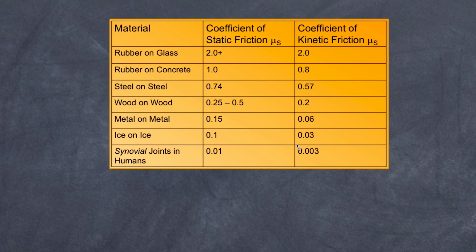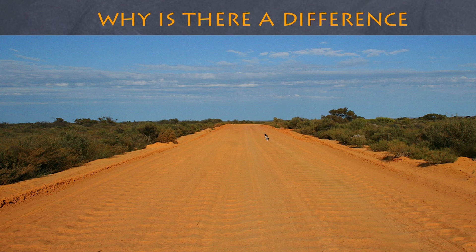Looking at ice, the coefficient is significantly lower. In synovial fluid — the fluid in your joints between your bones — the coefficient of static friction is really low, which is what you want: lots of lubrication and very little resistance. But the coefficient of kinetic friction is significantly lower still. Why is there a difference between static and kinetic friction, and why is kinetic friction lower? To explain that, here's an analogy that will hopefully help.